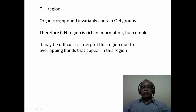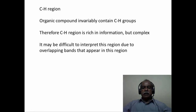Let us have a look at the CH region. Almost all organic compounds will have a CH functional group, because unless a substance is completely fluorinated or completely halogenated, it will have the CH group present. Therefore, the CH region is fairly rich in information, but highly complex in nature in terms of analysis. It may be difficult to interpret this region due to overlapping bands, since OH, CH, and NH appear in nearly the same region.